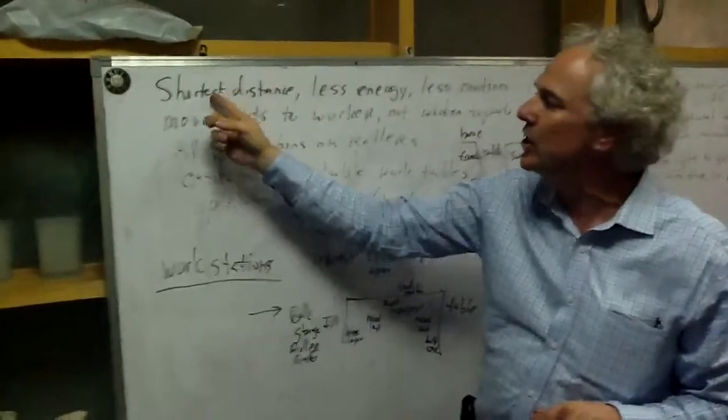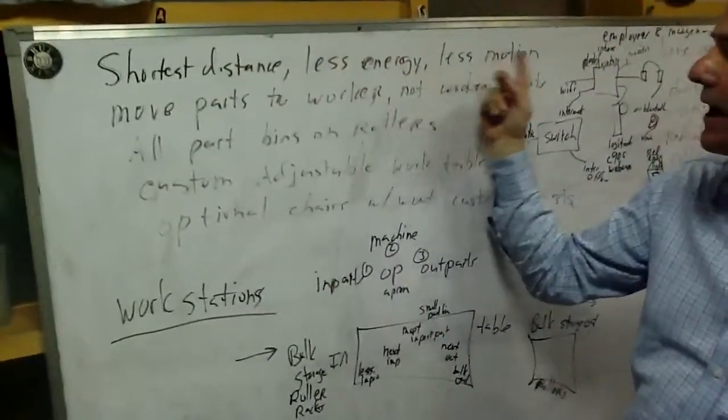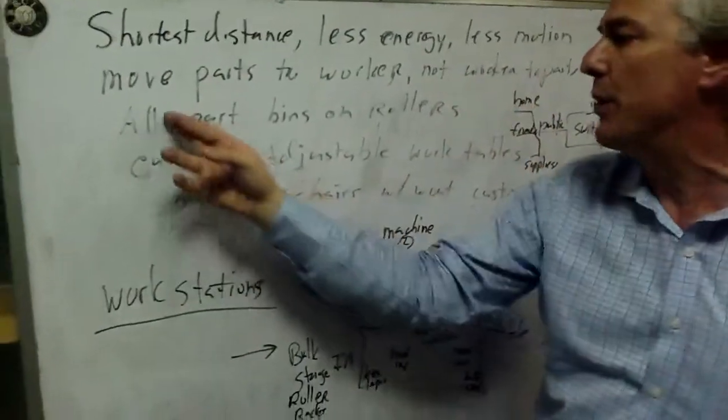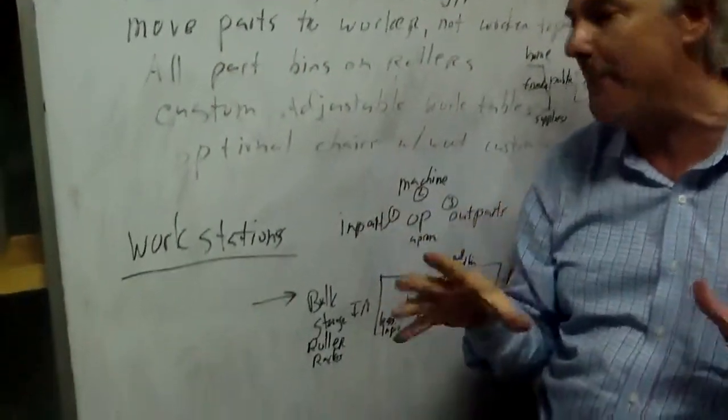Number one thing is on any workstation: shortest distance, less energy, less motion. You move the parts to the worker, not the worker to the parts. You put all part bins on rollers to very rapidly move things in.